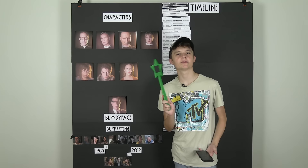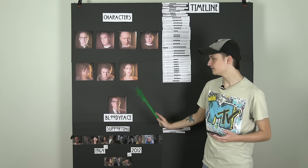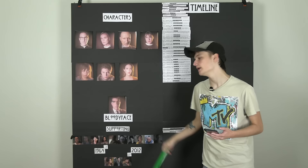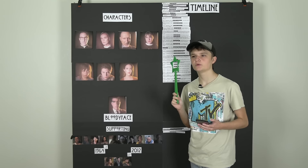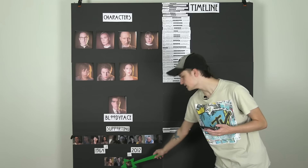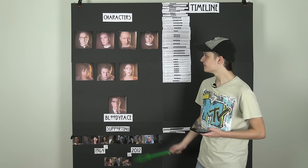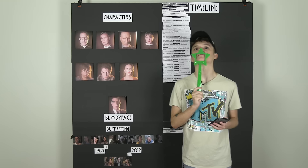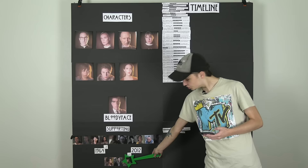Episode nine begins with a flash forward to 2012. We are introduced to Johnny — the son of Bloody Face. In 2012, October 23rd, Johnny kills his therapist after revealing he is into the same thing his father was: cutting the skin off of women. Day 63, two days after the Christmas episode — Lana finds out through Mary Eunice that she is pregnant, and that can mean only one thing: the only person she's slept with against her will is Bloody Face, Dr. Oliver Threadson. Johnny is the child of Lana and Bloody Face.